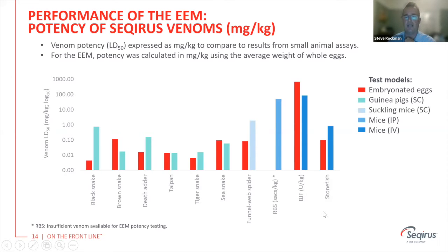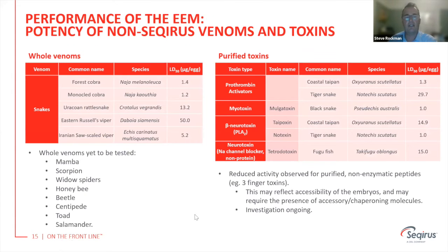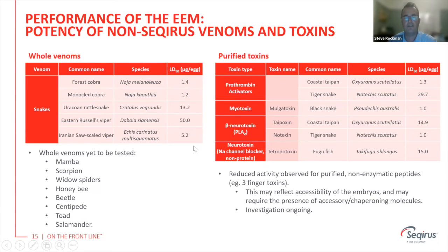We think this is a universal approach for medically relevant venoms to replace the current system of using animals. We've also tested a range of non-Australian venoms — different cobras, rattlesnake, Russell's viper, and saw-scale viper — and we get an LD50, meaning the venom is active in this system. We're going to test a whole range of other venoms, which is in process, to see the breadth of this model for other researchers.